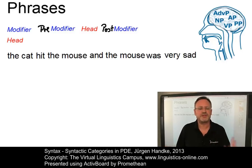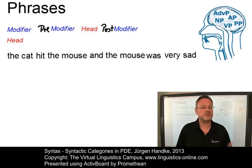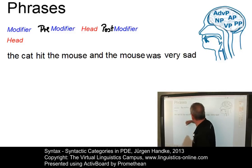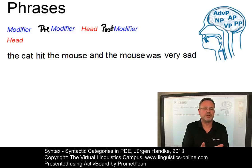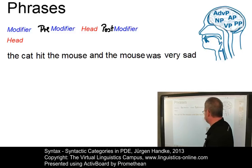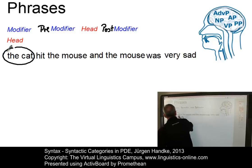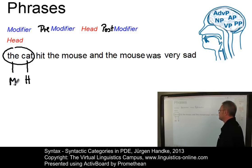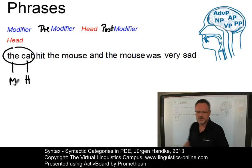The head is the central or obligatory element which determines the type and distributional properties of the phrase. Modifiers add something to the meaning of the head. Pre-modifiers precede and post-modifiers follow the head. The words of a phrase form a single syntactic unit which can be moved around and substituted by another word or phrase. Taking the cat, for example, cat is the head and the determiner the is the modifier. The whole unit can be moved — we can transform it into a passive sentence: The mouse is hit by the cat.